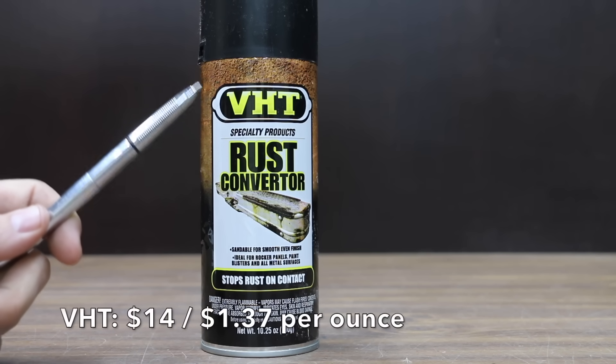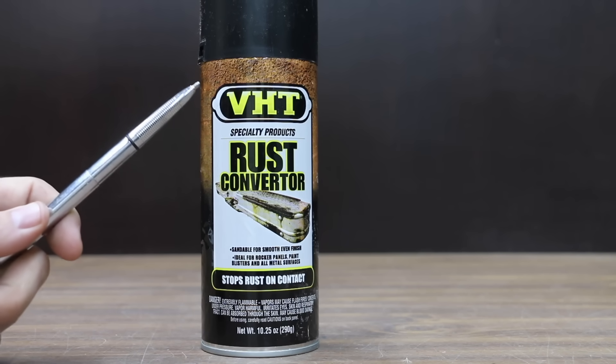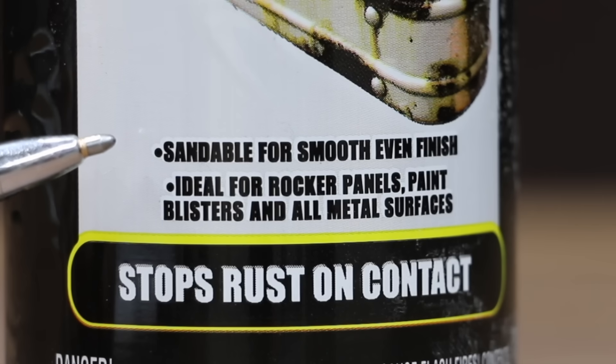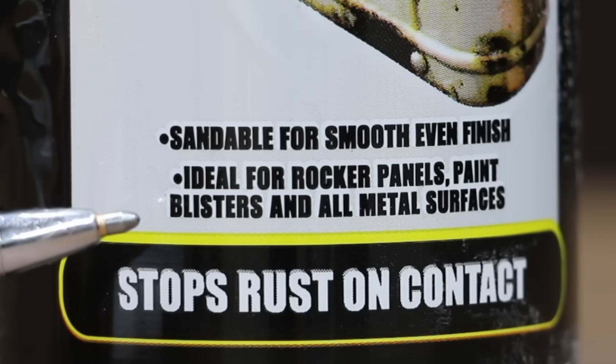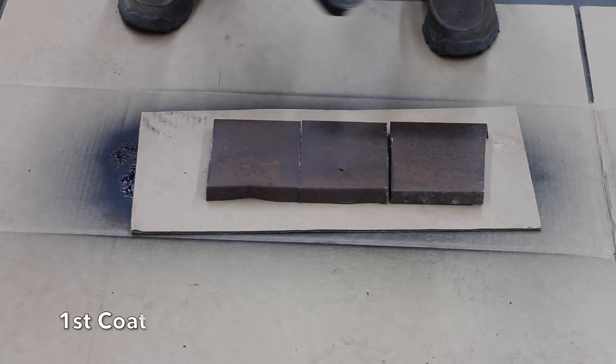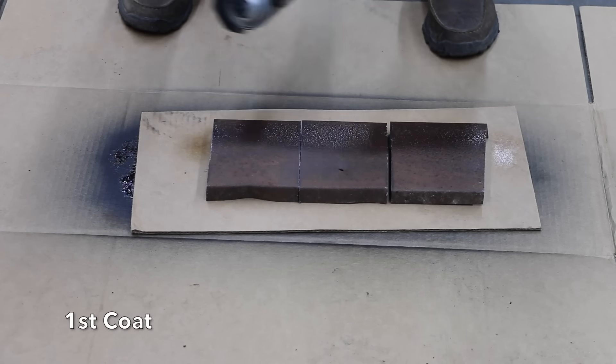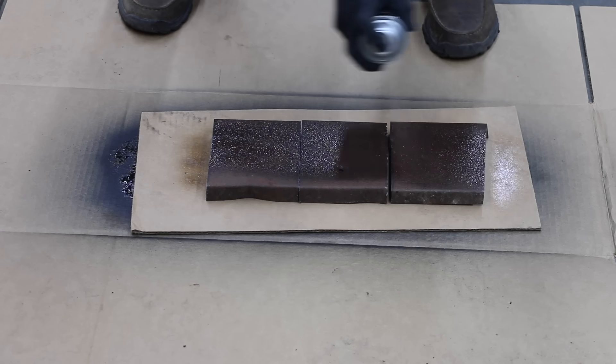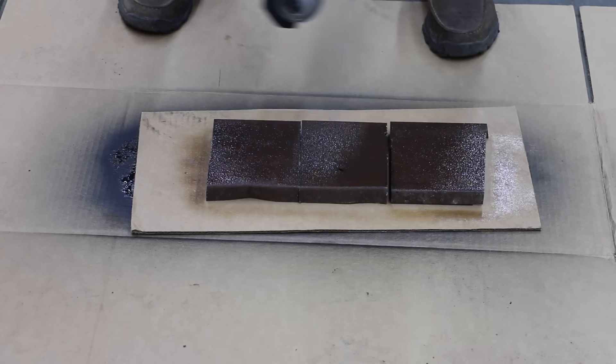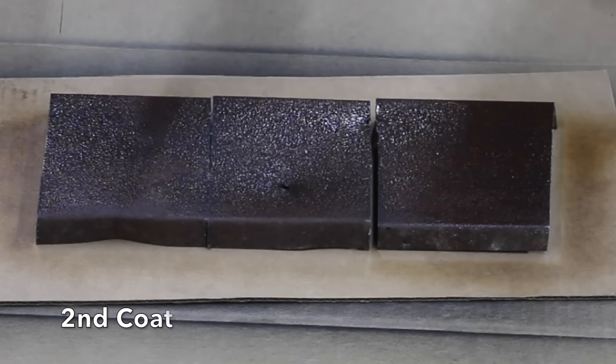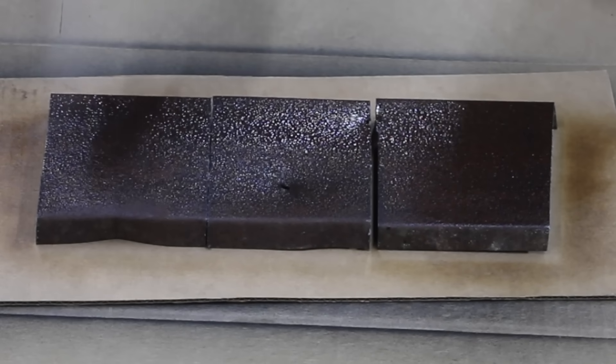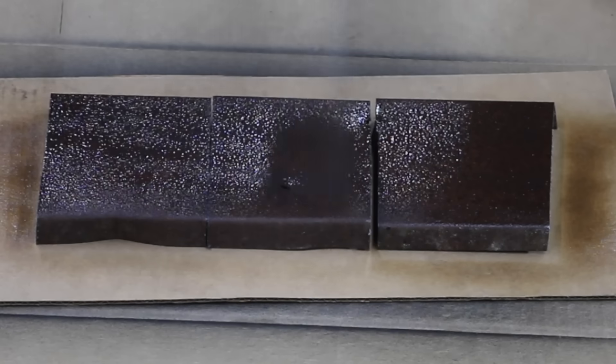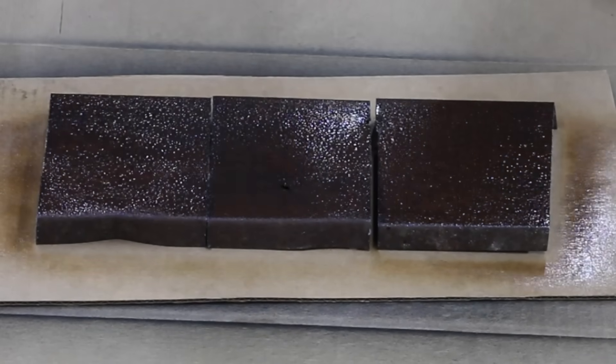At a price of $14 for 10.25 ounces or $1.37 per ounce is this VHT Rust Converter. Sandable for a smooth, even finish. Ideal for rocker panels, paint blisters, and all metal surfaces. The VHT is made in USA. Prepare surface by removing loose paint, dirt, rust, grease, and wax. Remove as much rust scale as possible using 50-grit sandpaper or a wire brush. Hold can parallel and 8 to 10 inches from surface to be coated and use an even sweeping motion. Apply 2 to 3 light coats. I applied a second coat of VHT about a minute after the first coat.